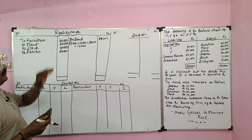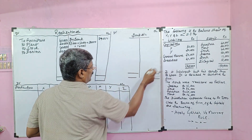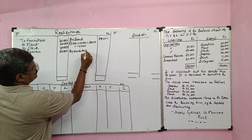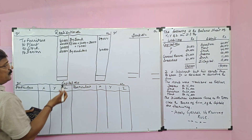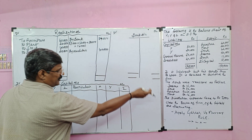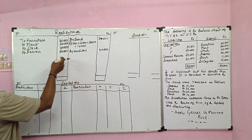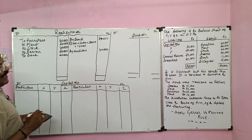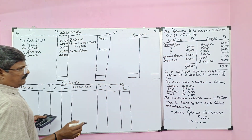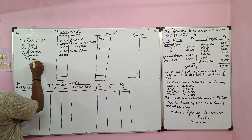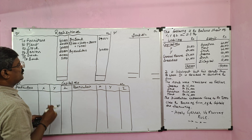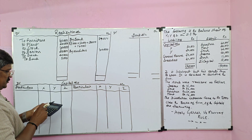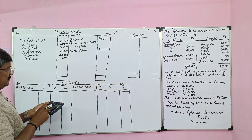Then we should take the external liability. Here we have only one liability — creditors. The entry is: Creditors Account debit to Realization; value 40,000. Next, we have to make payment to the creditor. The realized value for the creditor is not given, so we have to pay the entire amount. Entry: Realization Account debit to Bank, 40,000. For realization expenses, entry: Realization Account debit to Bank, 5,000. Now the realization account debit side total: 40,000 plus 20,000 plus 40,000 plus 20,000 plus 40,000 plus 5,000.